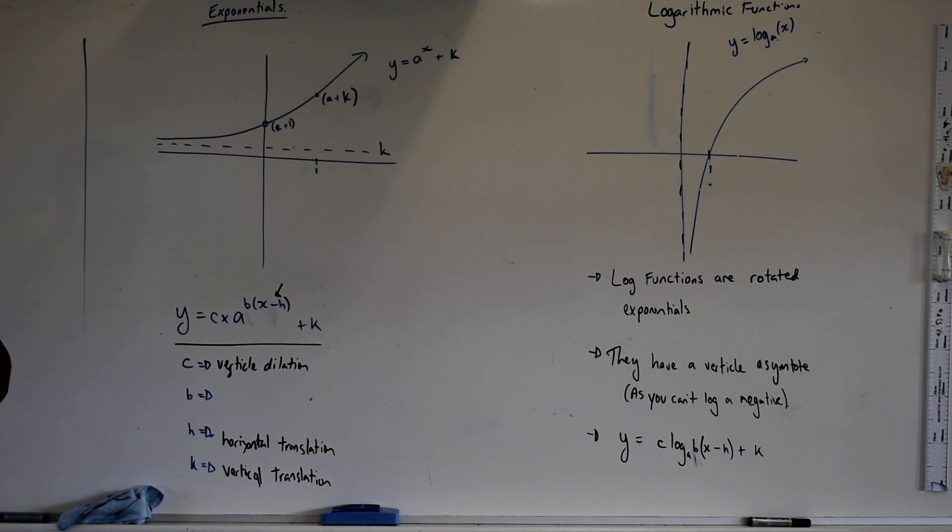And then lastly we've got b. We have looked very briefly at b, but what do you think b can do? Where is b applying next to what value? X minus h. So let's say we've got a b value of 2 and that x value is 1 and h value is 0. What have we done to the x value essentially? Doubled it. So it's going to be a stretch. We can identify it's going to be a stretch of some variety.